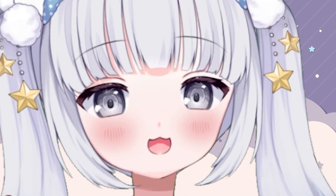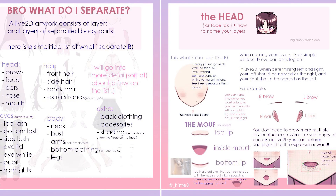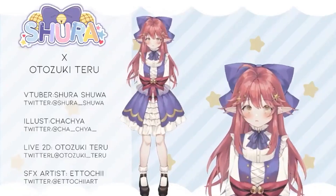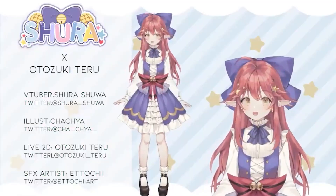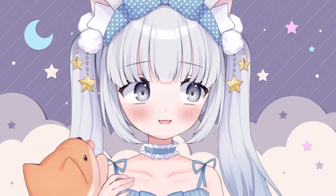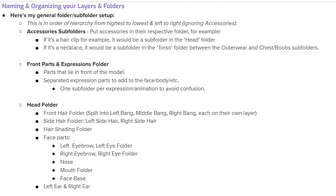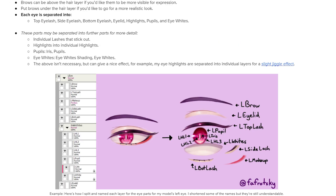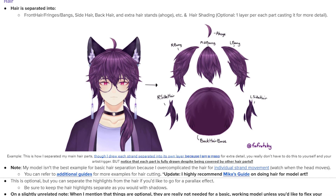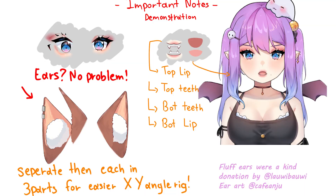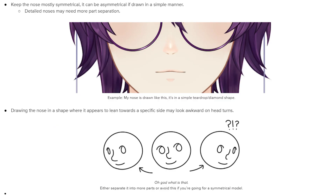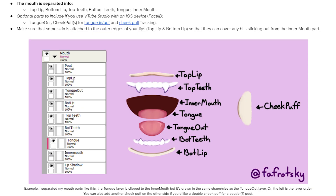Let's start with the head first, since that is literally the most important part of any model — it's what you see the most on stream. The head can be divided into these different sections: the face, the eyes, the front hair, the ears, the eyebrows, the nose, and the mouth.